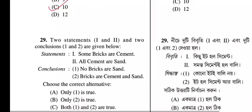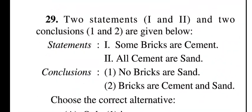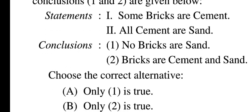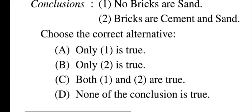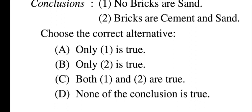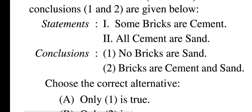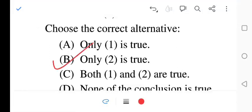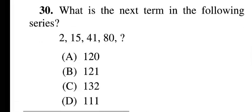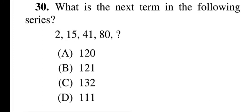Question twenty-nine: two statements and two conclusions are given. Statements: one — some bricks are cement; two — all cement are sand. Conclusions: one — no bricks are sand; two — some bricks are cement and sand. Options: only one is true, only two is true, both are true, none is true. Question twenty-nine, option B is correct: only two is correct.